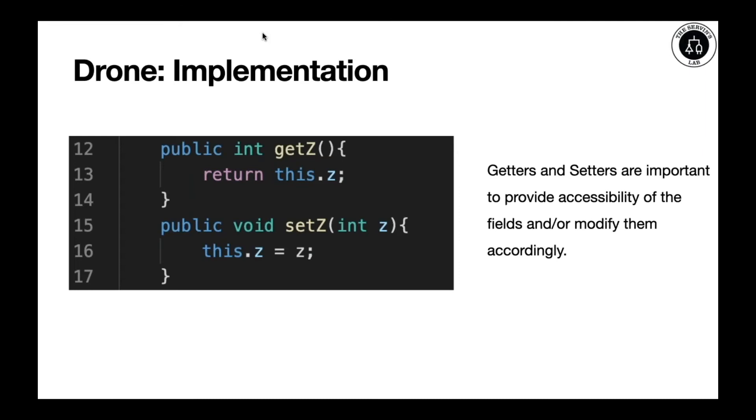How about getters and setters? Every good practice must include them as well. We're going to include getZ, which will give us the altitude in this class. Whereas setZ will give us a parameter and you initialize it with the this.z coordinate.